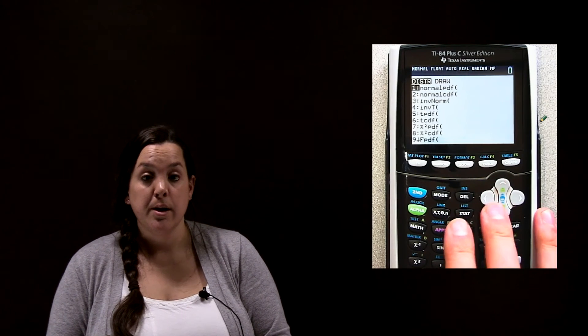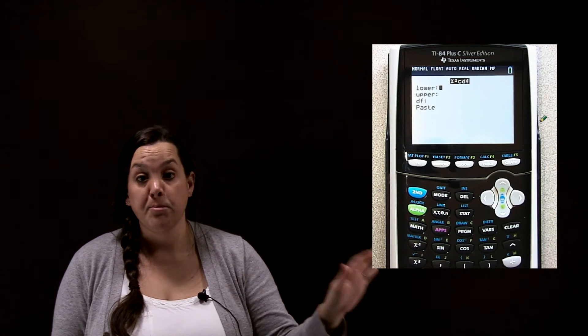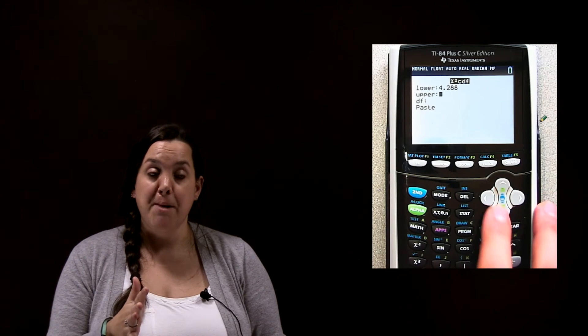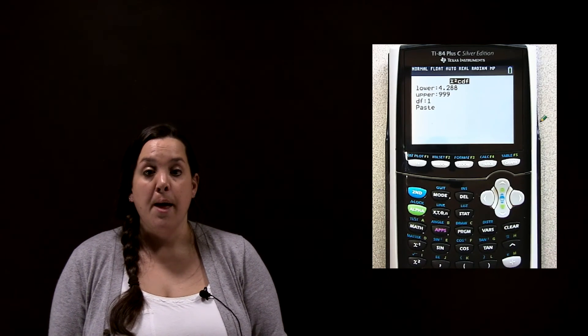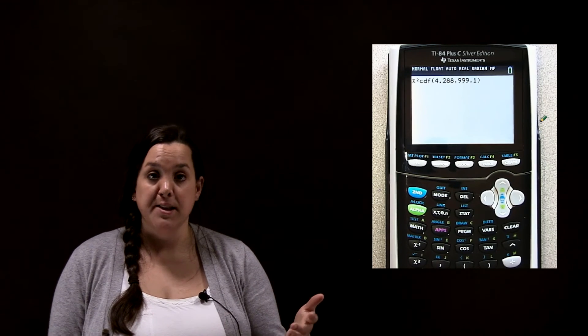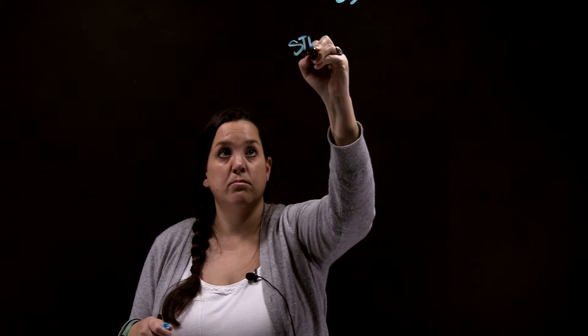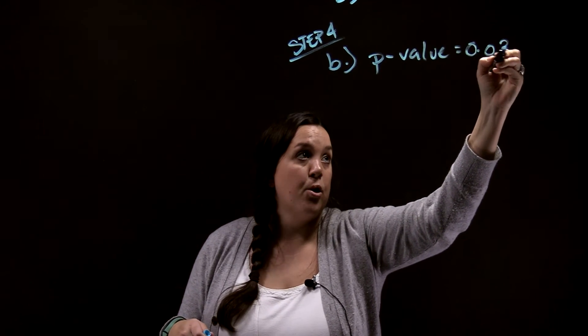Our chi-squared is equal to 4.3. We're going to find the probability of having that result or something more extreme. Using the chi-squared CDF function on the calculator, we go from our test statistic up to positive infinity — the calculator can handle 999 for infinity. So we enter 4.3 up to 999 with one degree of freedom. The resulting p-value is equal to 0.038.